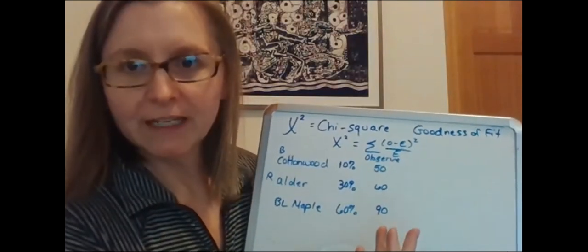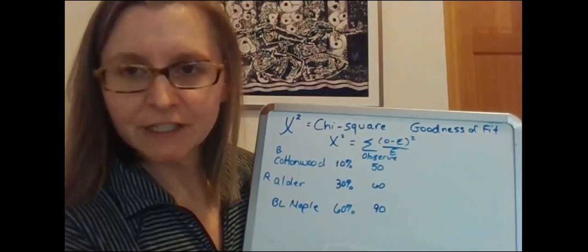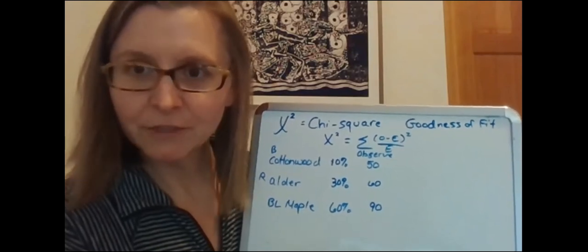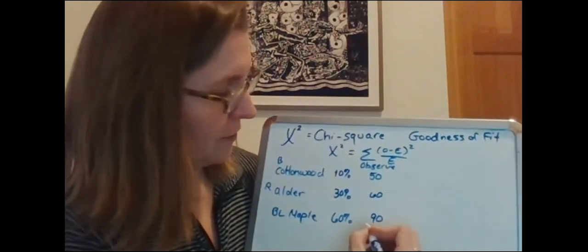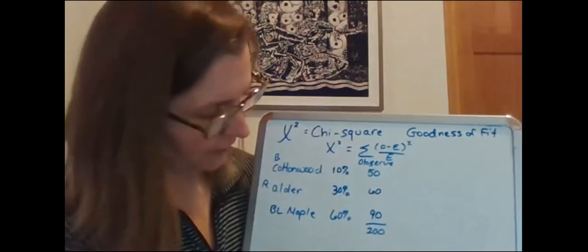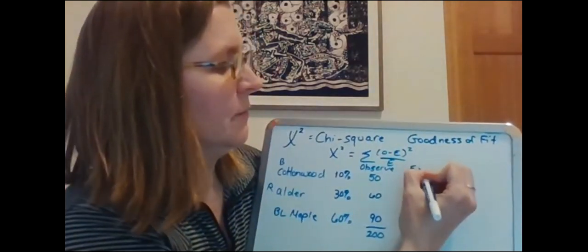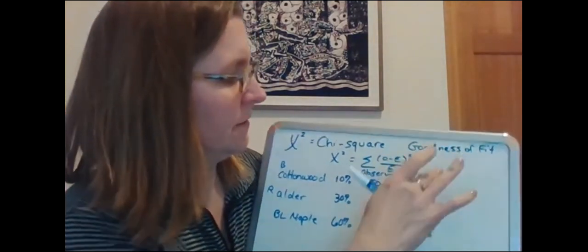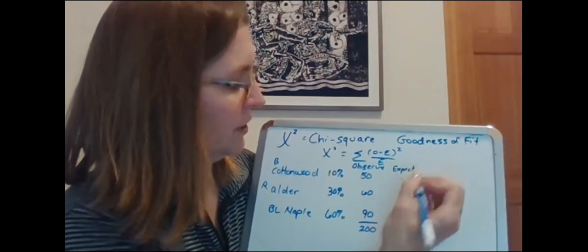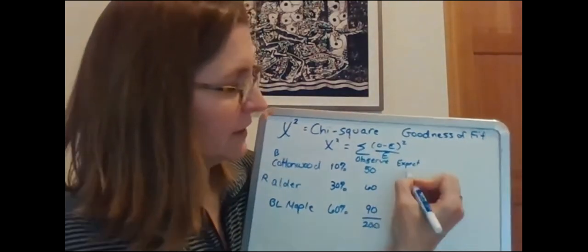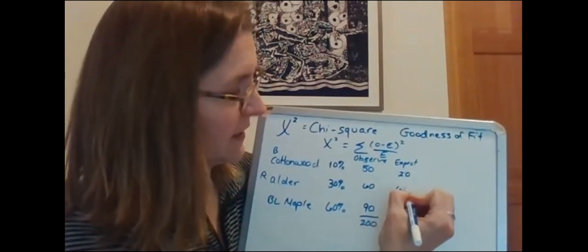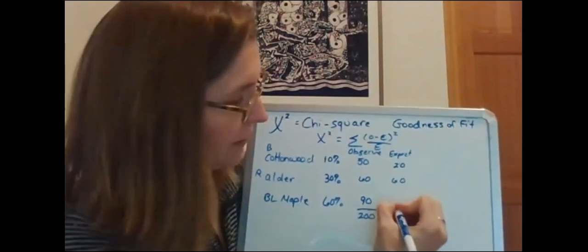I want to know is that number of observations and the frequencies in these different groups, is that different than I would expect due to random chance? And so what I do is I sum up my numbers: 50 plus 60 is 110, plus 90 is 200. And I can then calculate my expected values based on these percentages. So 10% of 200 is 20, 30% of 200 is 60, and 60% of 200 is 120.